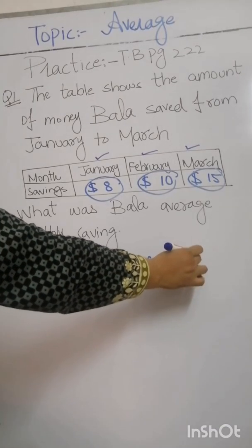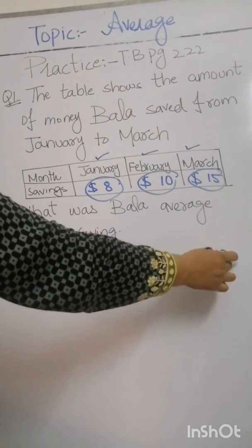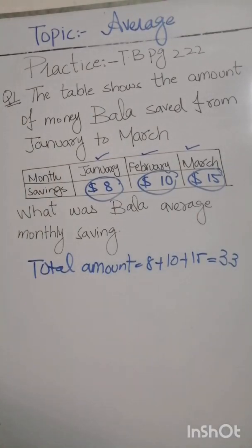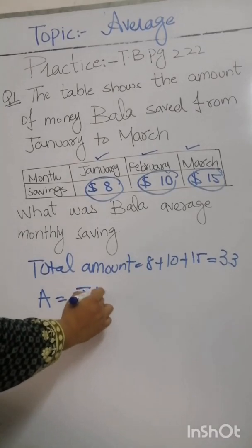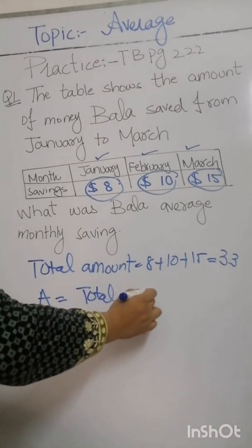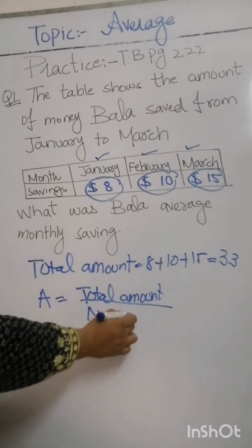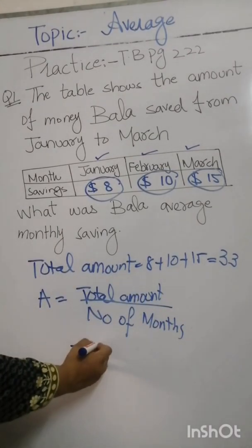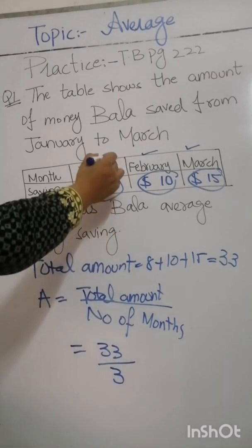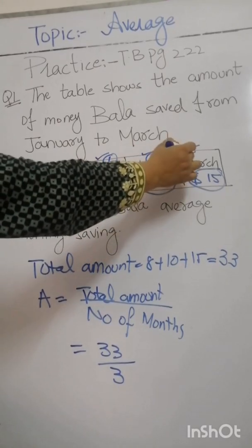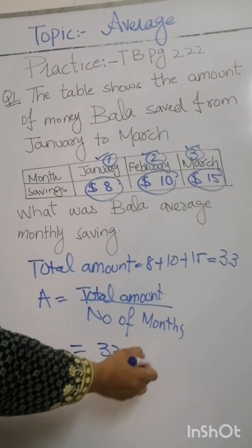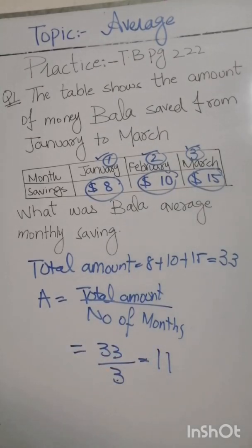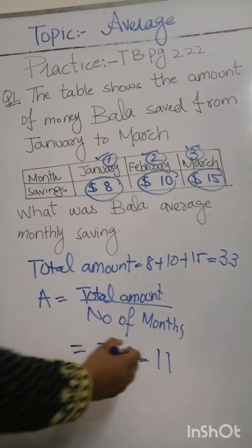8 plus 10 plus 15, we get 33. Now we put the formula to find the average. The formula is: average is equal to total amount divided by number of months. Total amount we have is 33, and the number of months we have is 1, 2, and 3 — that is three months. When we divide 33 by 3, we get 11. So the average monthly saving is $11.